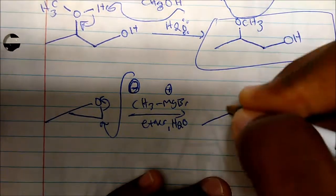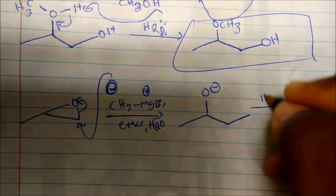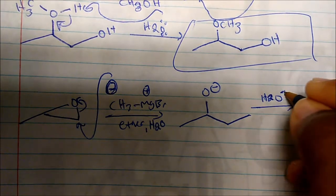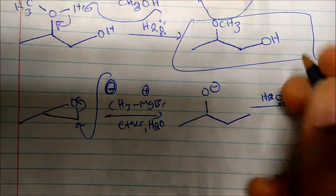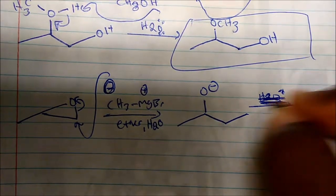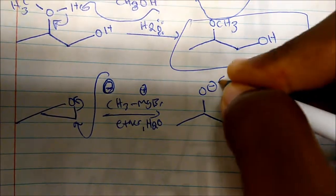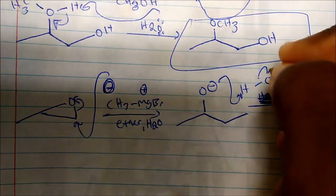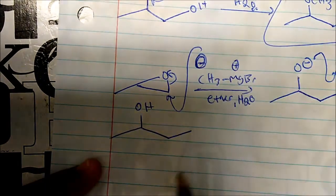After the attack, we have a CH3 group added and an oxygen that is negatively charged. In the second step, water comes in — it serves as a hydrogen source. It comes in and gives one of those hydrogens to the oxygen, forming the bond on oxygen, and now we get our neutral product: a secondary alcohol.